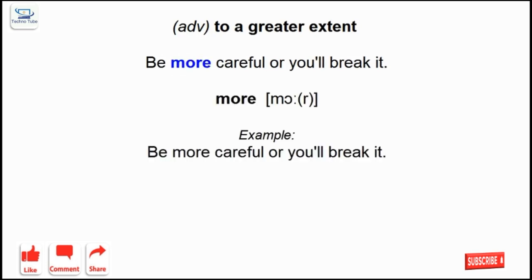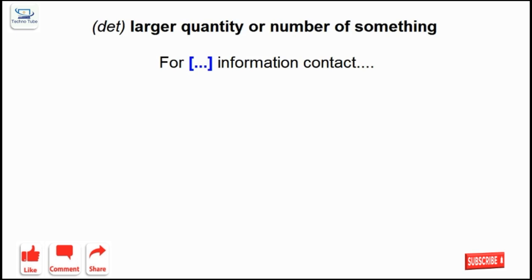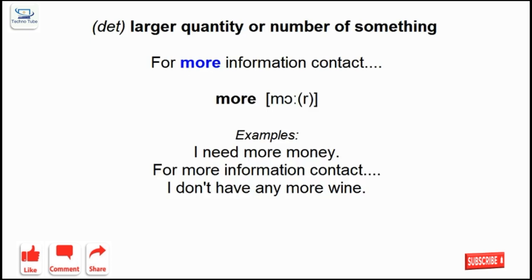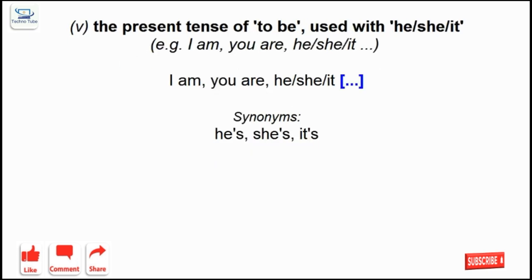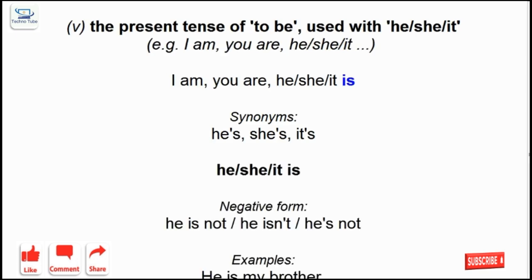More: to a greater extent. More: larger quantity or number of something. Is: the present tense of to be, used with he, she and it.